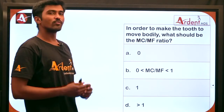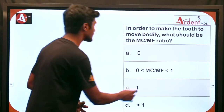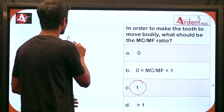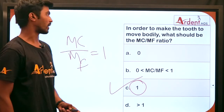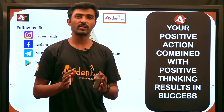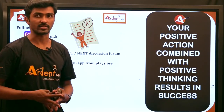To make the tooth move bodily — without tipping in either direction — the counter moment must be equal to the moment of force, so the moment to force ratio must equal 1. I hope this session was useful. The moment to force ratio is a very simple concept and easy to understand. Thank you.